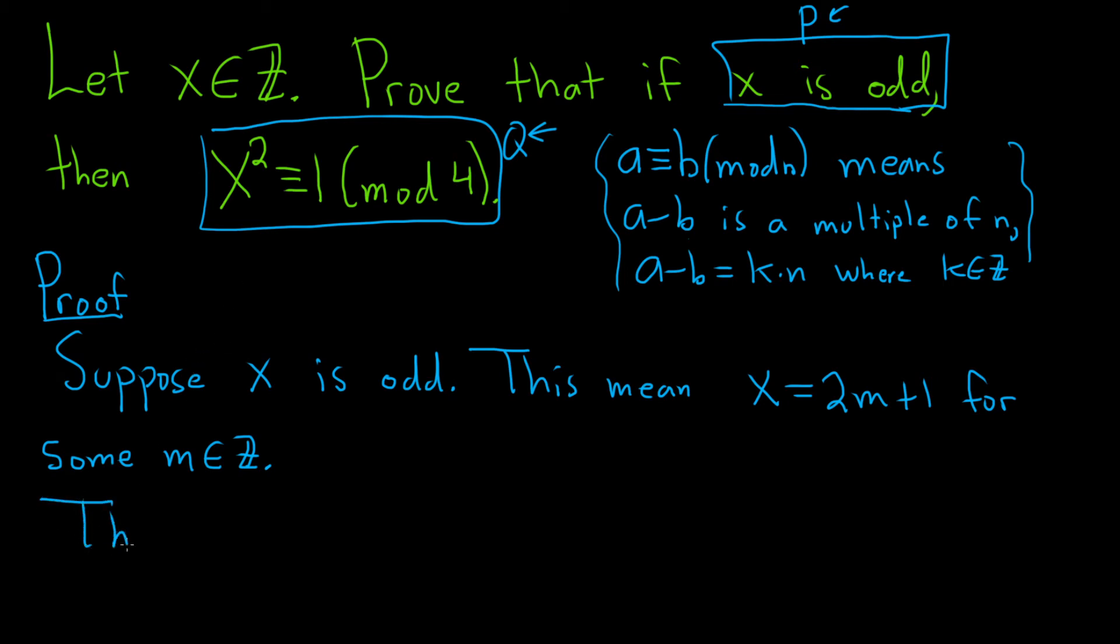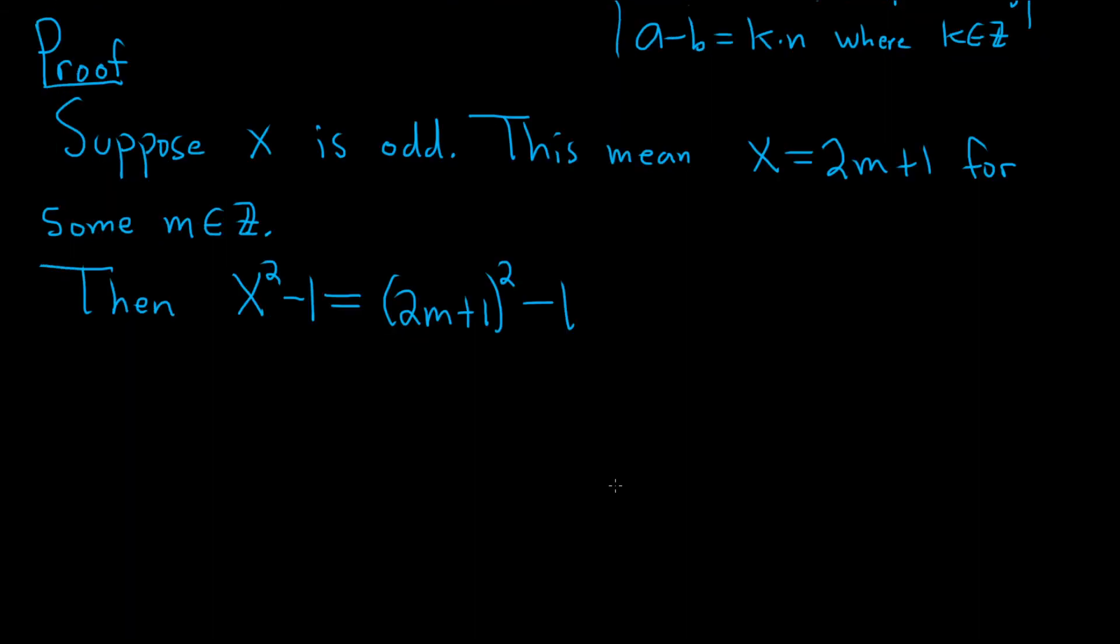Then x squared minus 1. Well what is this? This is equal to, well x is 2m plus 1, so 2m plus 1 squared minus 1. And then we can multiply this out. There's a shortcut here. You square the 2m so you get 4m squared. You multiply these and double them, so 2 times 2m is 4m. Then you square the 1, and you still have the minus 1.